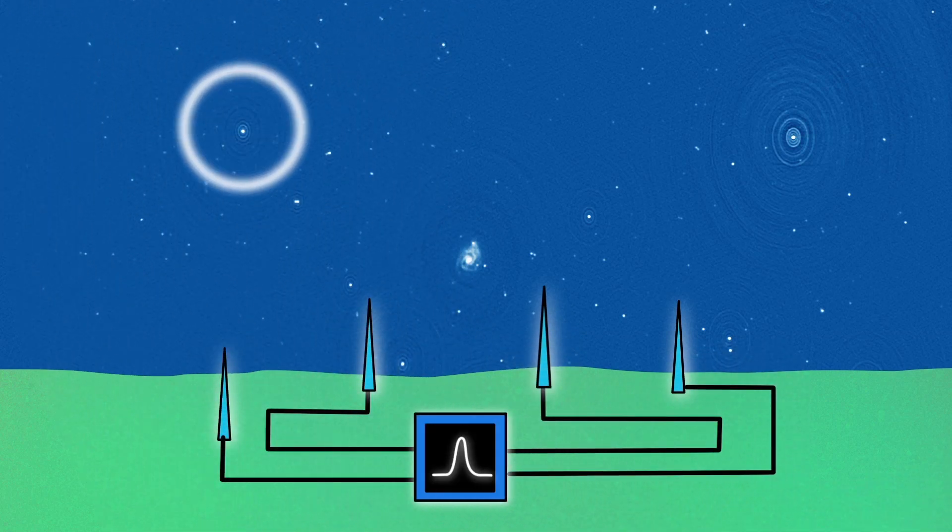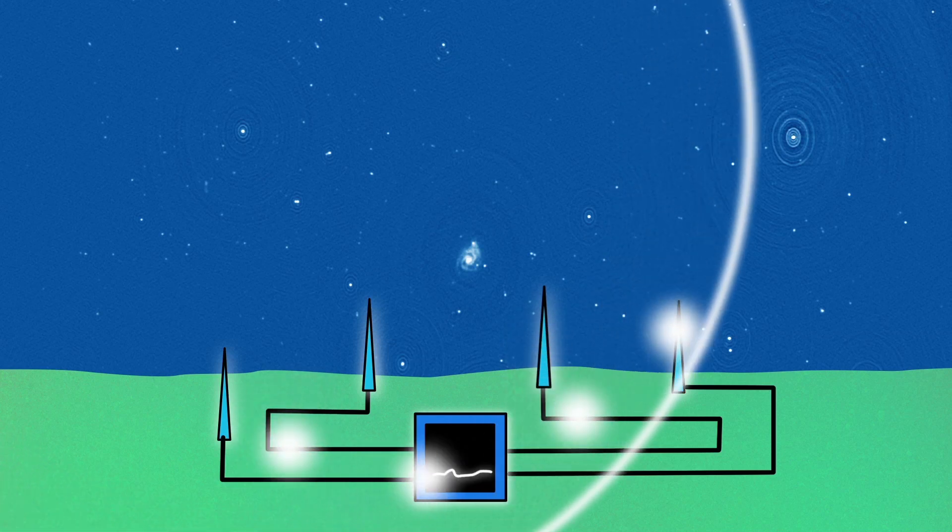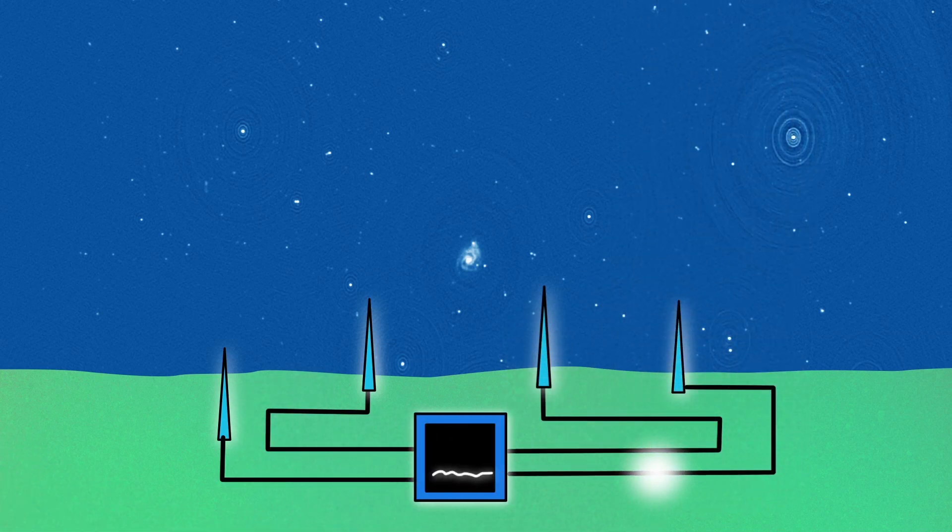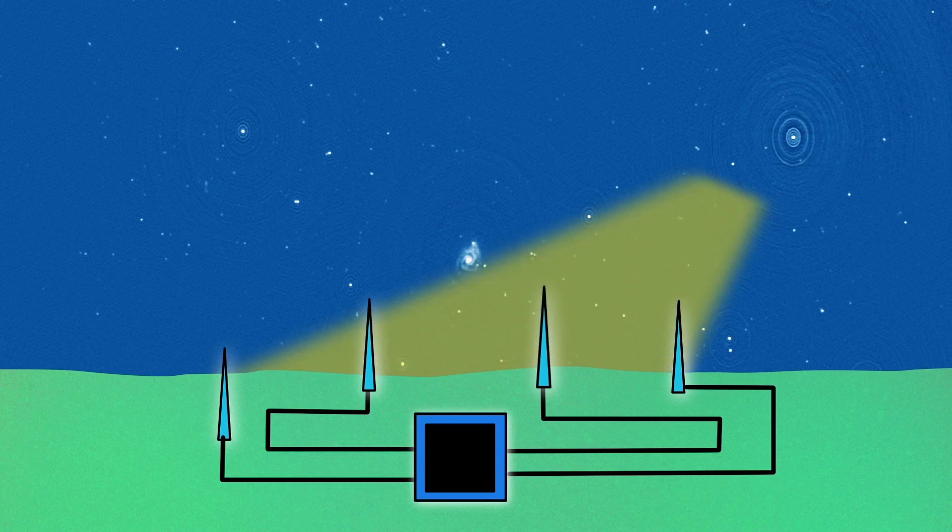For signals from all other angles, this doesn't work so well, so these get filtered out. It is like constructing a narrow cosmic searchlight looking at a small patch in the sky.